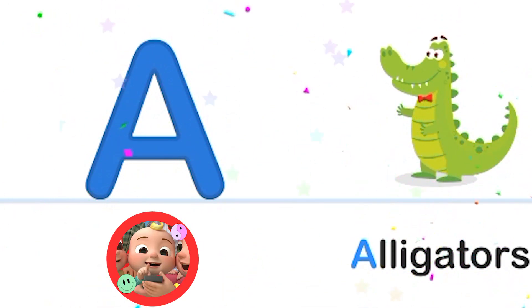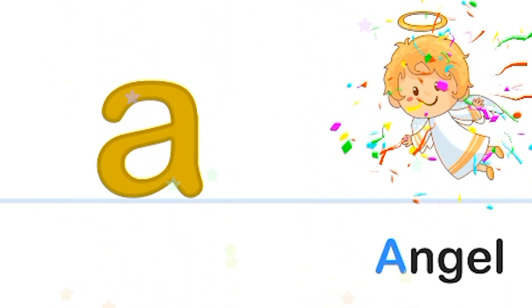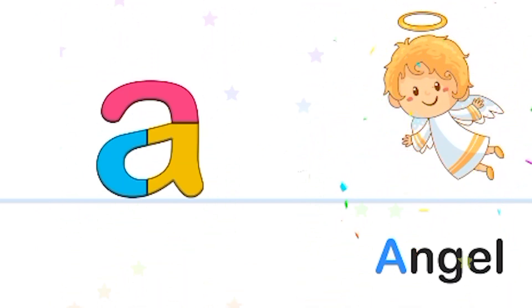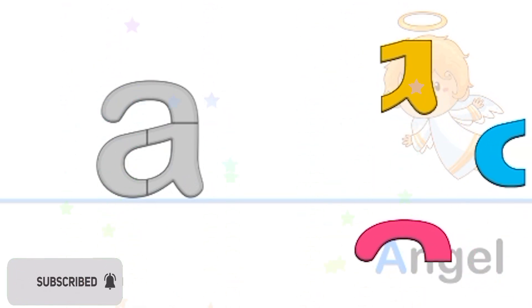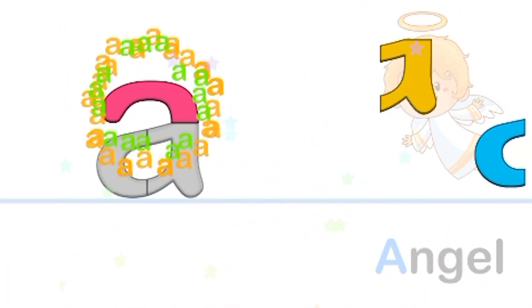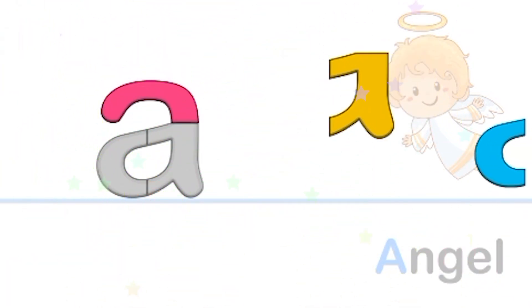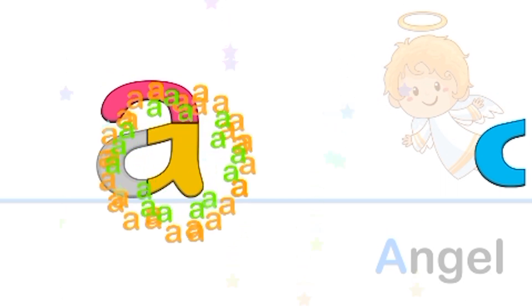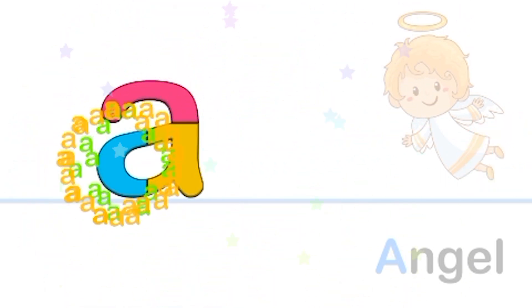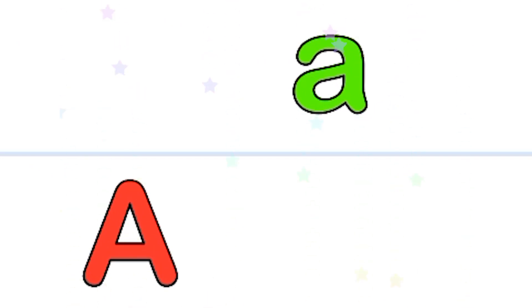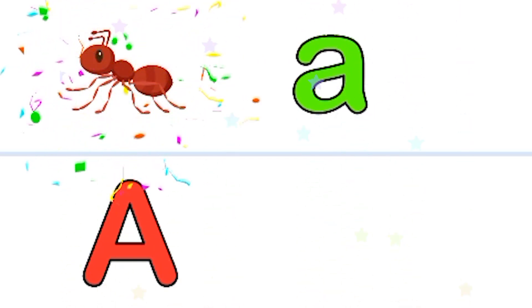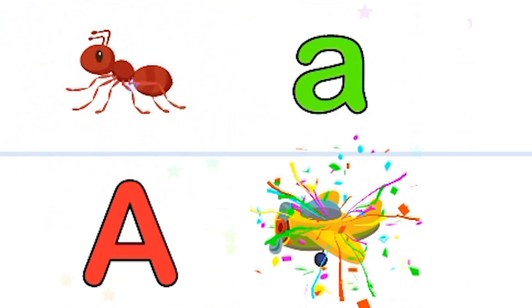A is for angel. Good one. Good job. Smart. A is for ant. And for airplane.